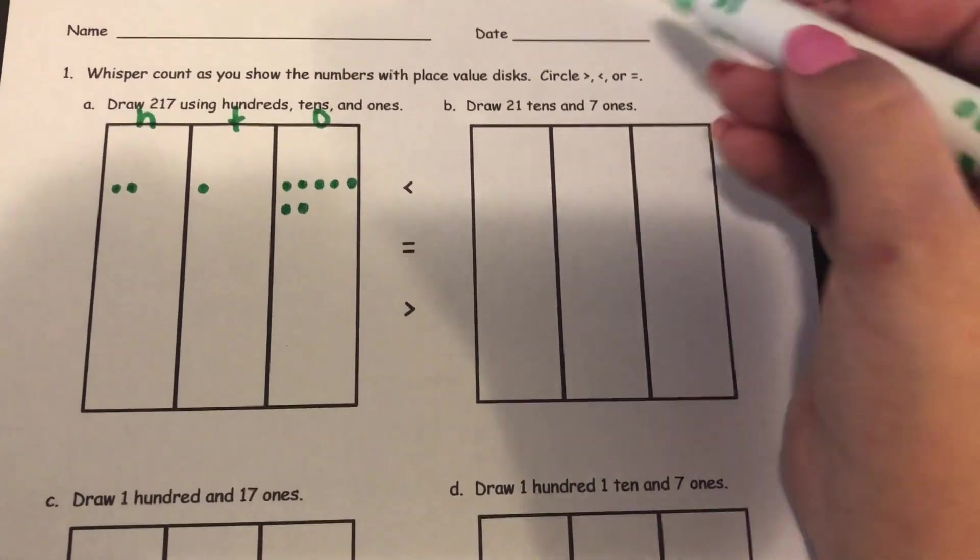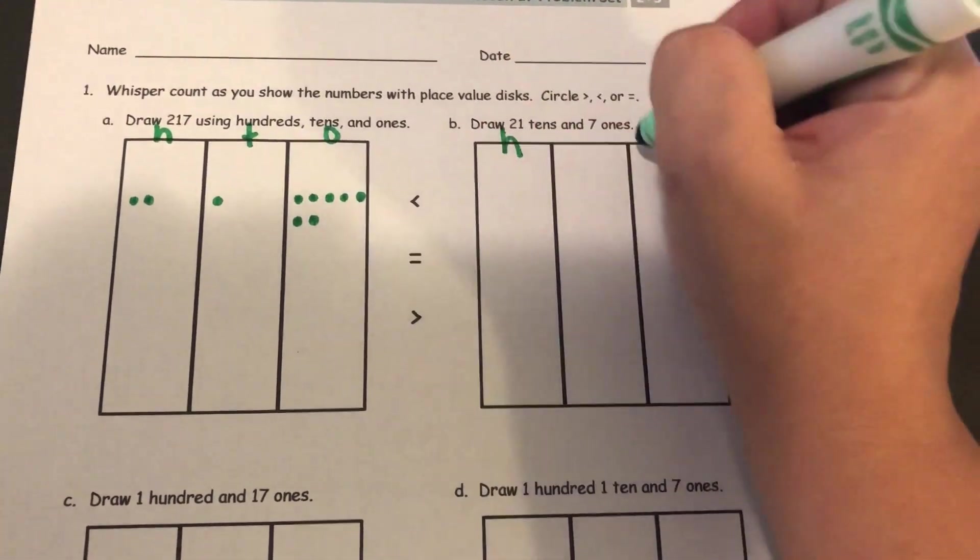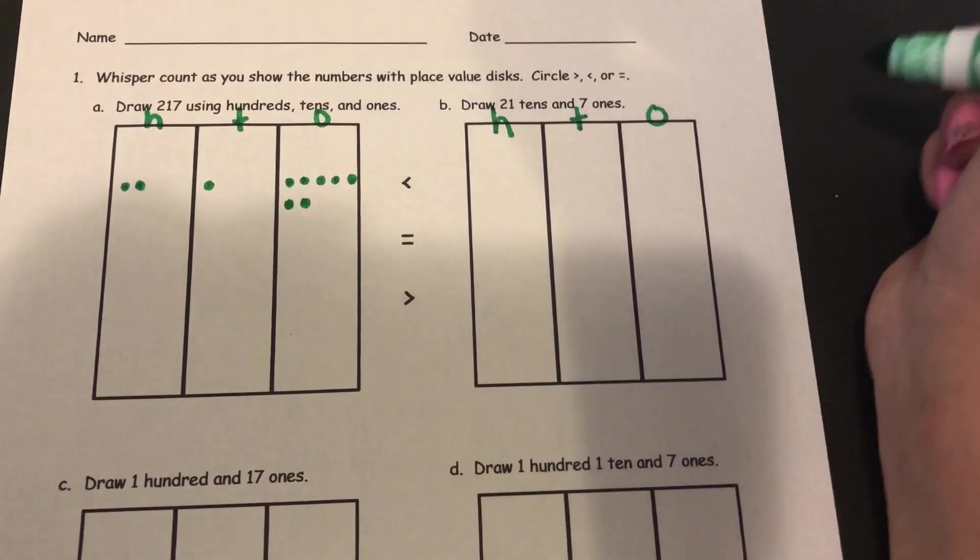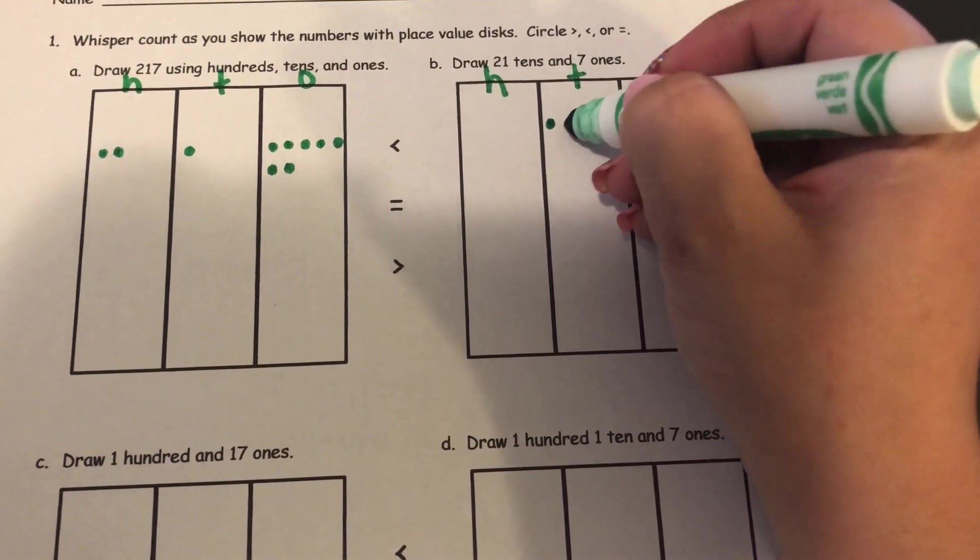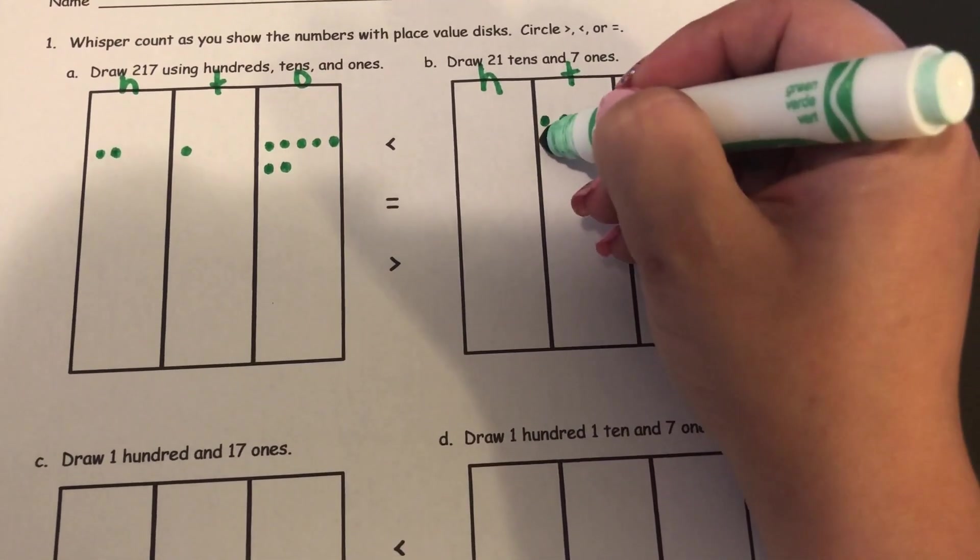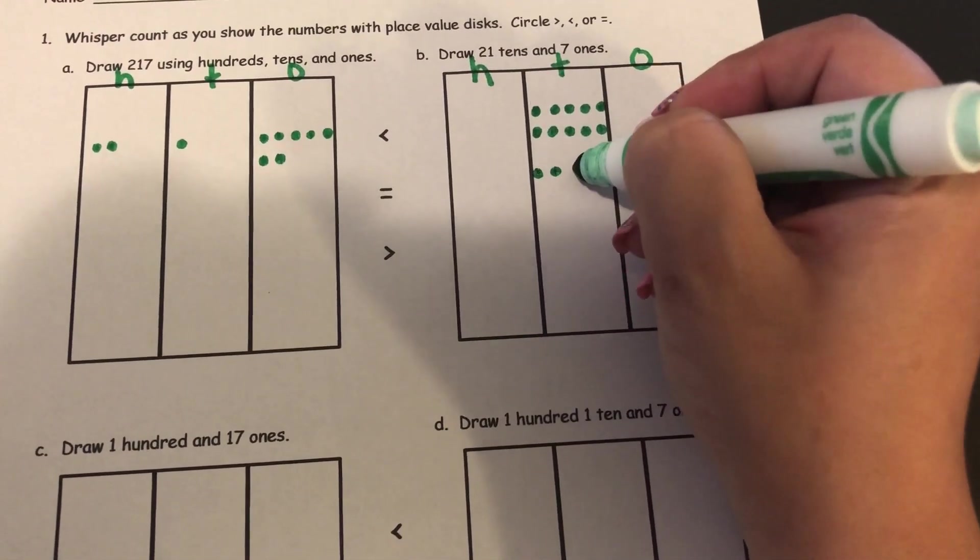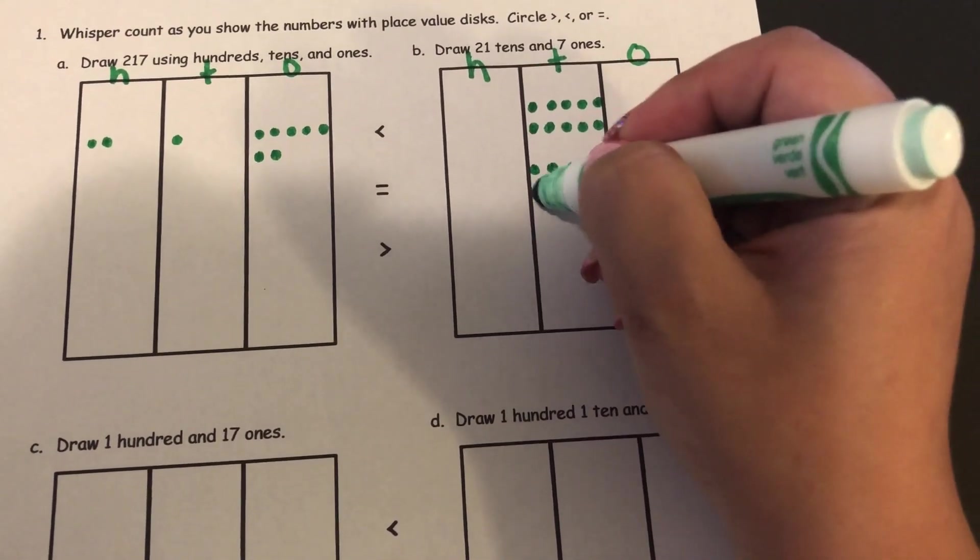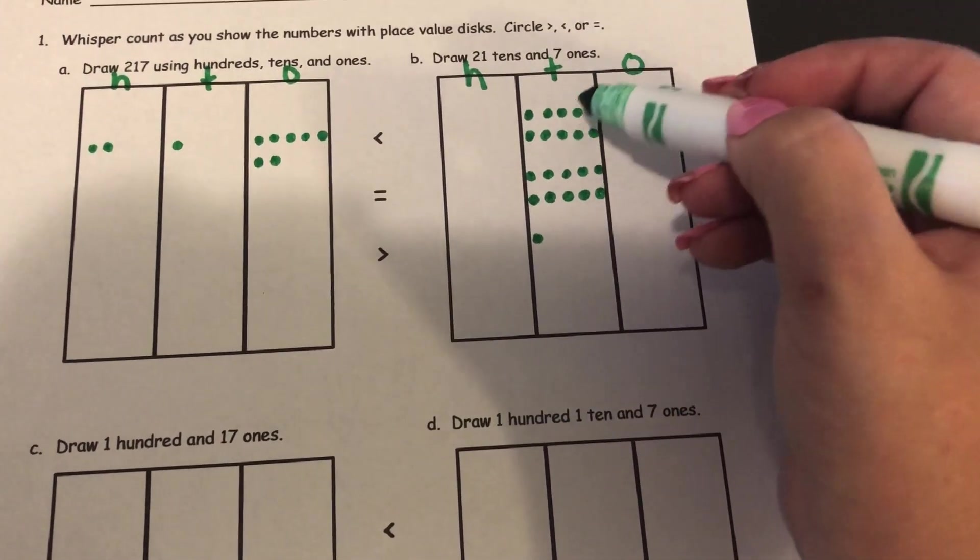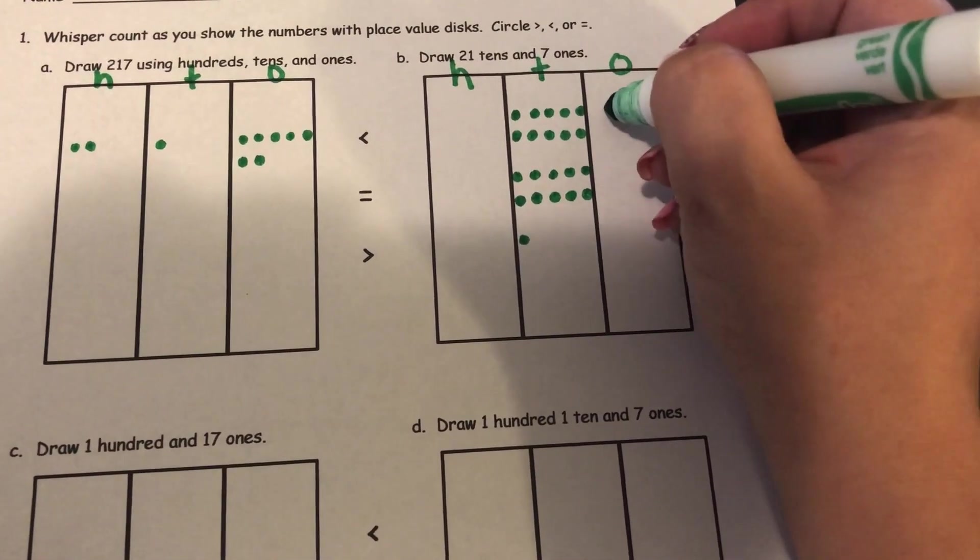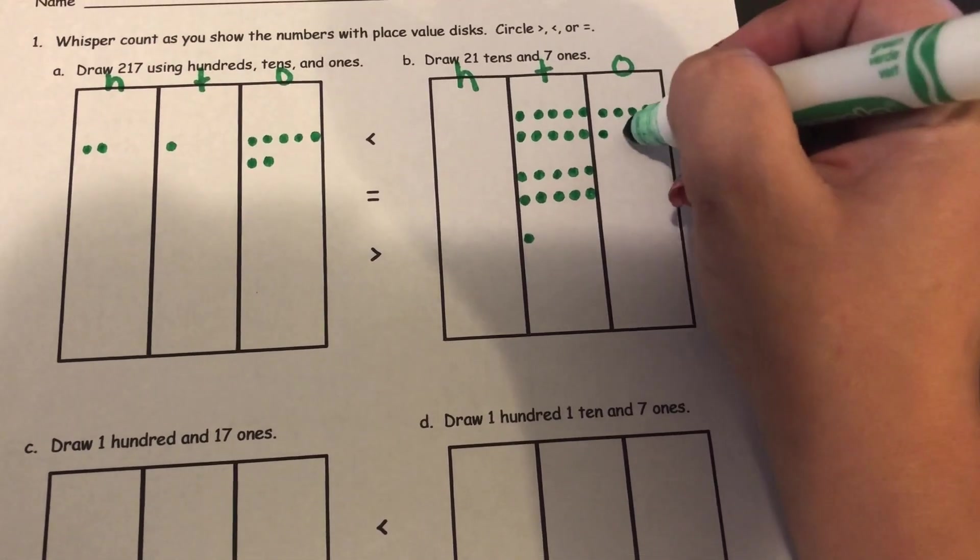And for the second one it says to draw 21 tens and seven ones. So I'll label my place values hundreds, tens, ones and I've got 21 tens. So one, two, three, four, five... [counting to twenty-one] twenty-one tens and seven ones. One, two, three, four, five, six, seven.